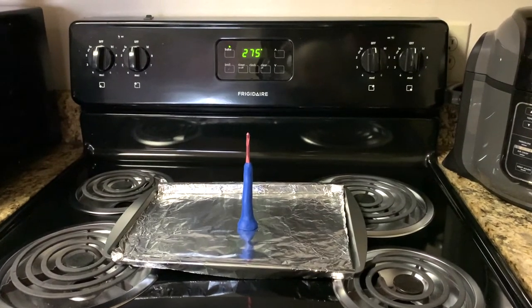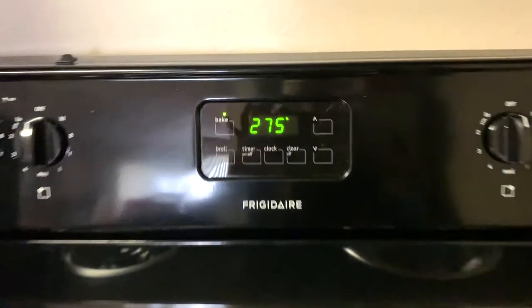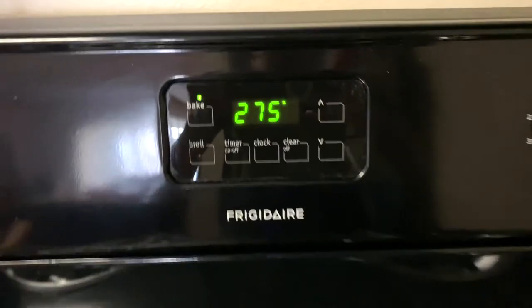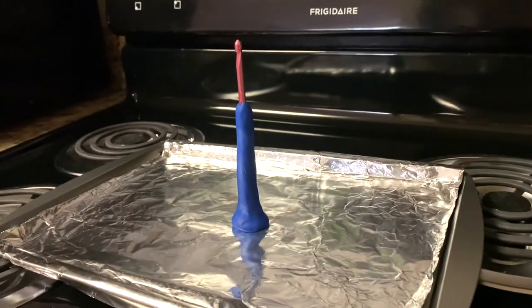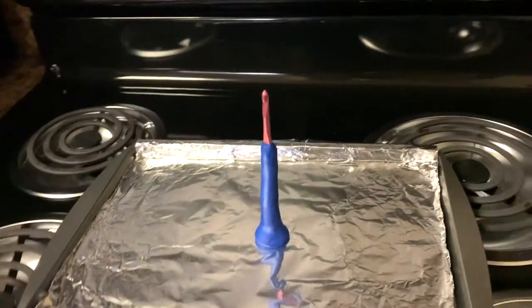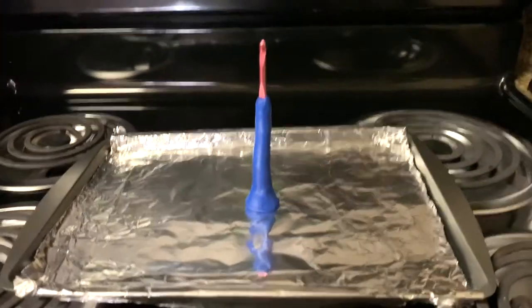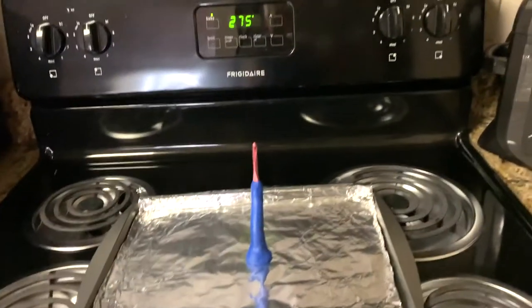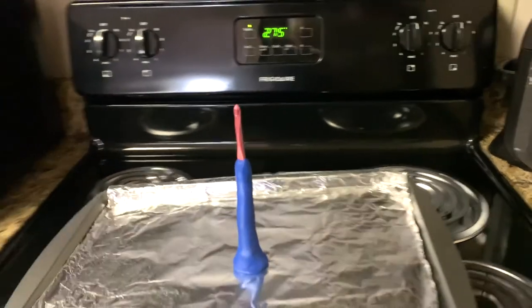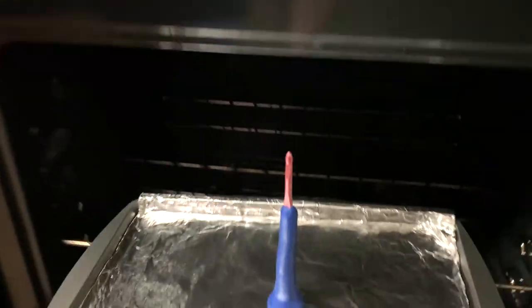So be sure to follow your clay package's directions. Mine say 275 degrees Fahrenheit anywhere from 10 to 15 minutes. So I preheated my oven to 275 degrees. I'm going to put it on the middle rack and I'm going to bake mine for about 12 minutes to begin with, and then I'll monitor it and see if I need to add a few more minutes.